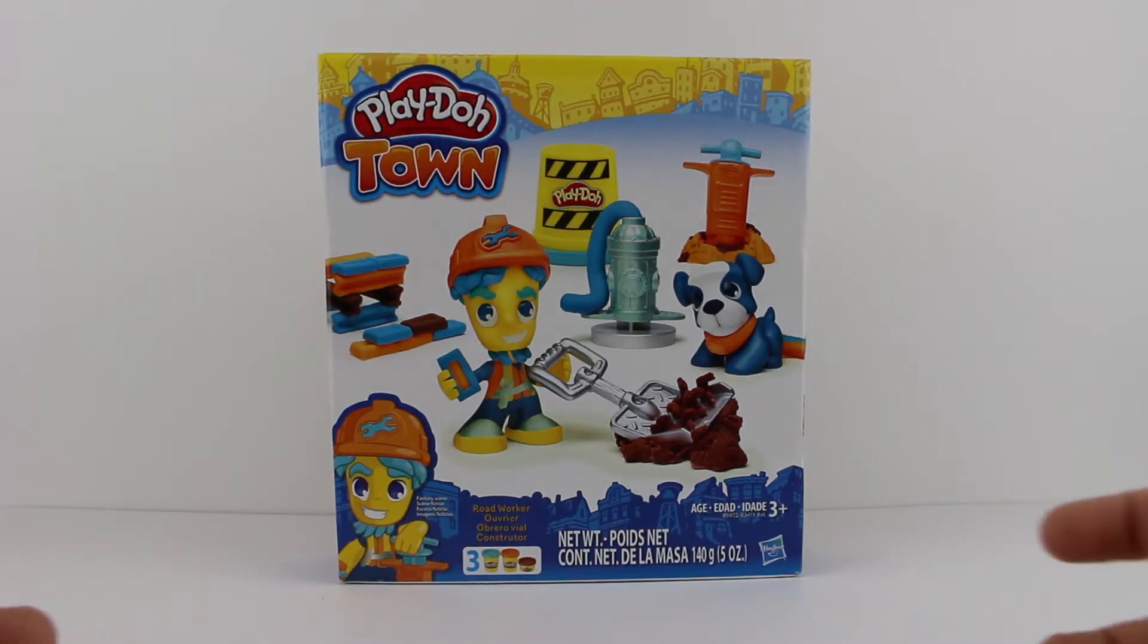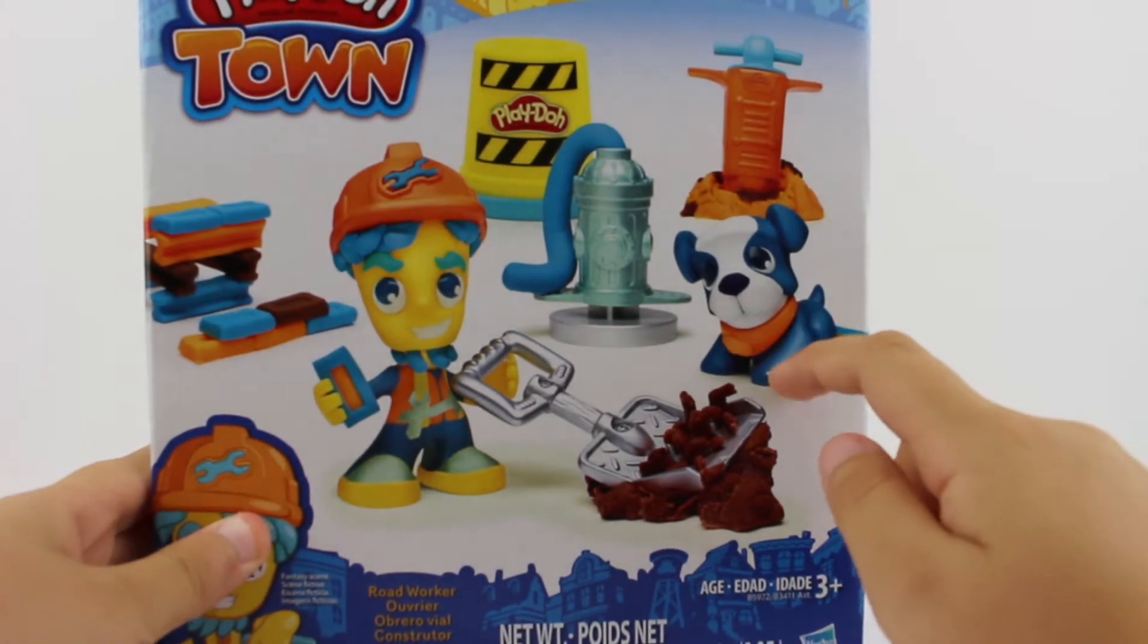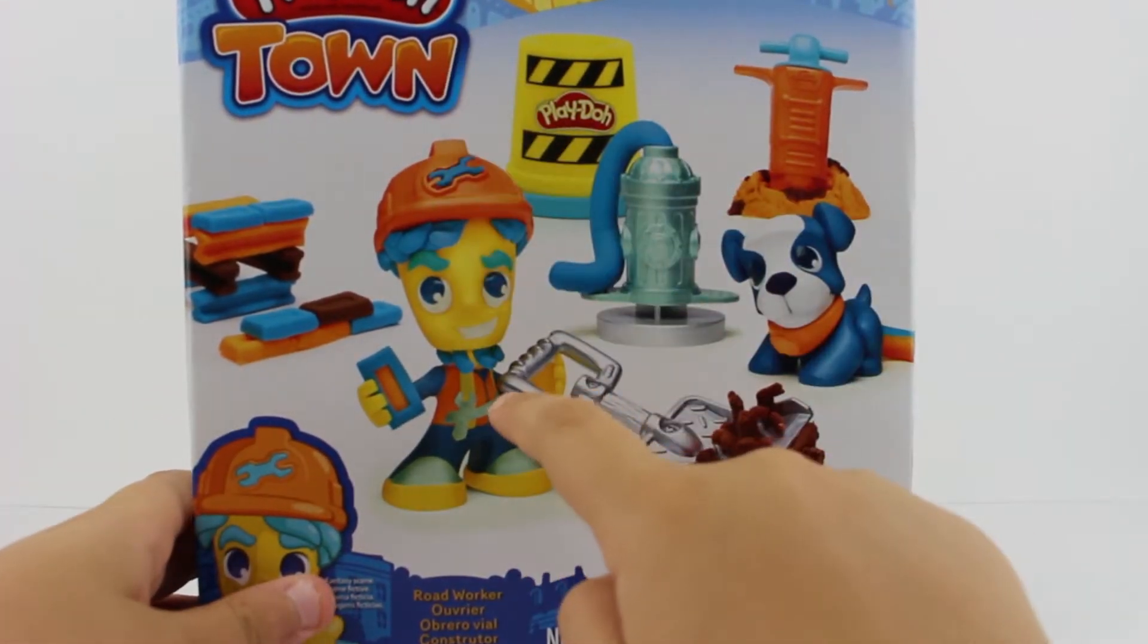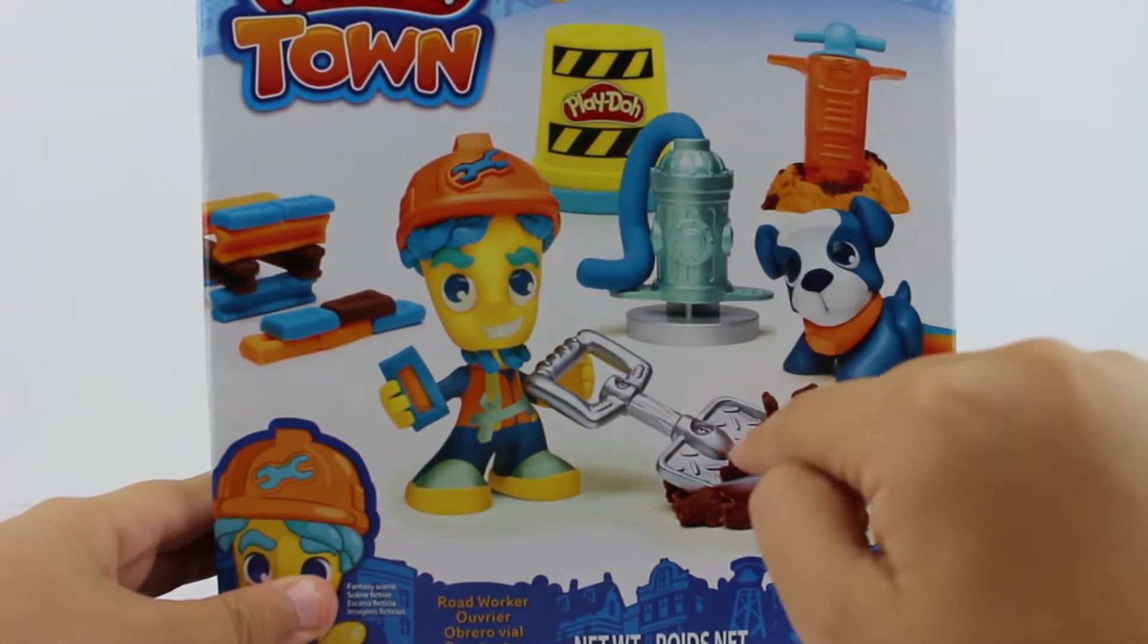Hey kids, today we have Play-Doh Town. We have a dog, a fire hydrant, a jackhammer, a guy with a hat, and a shovel.